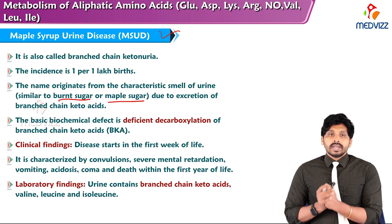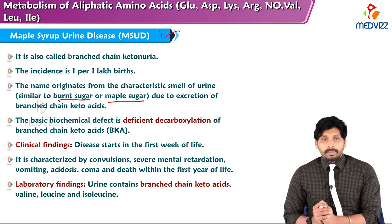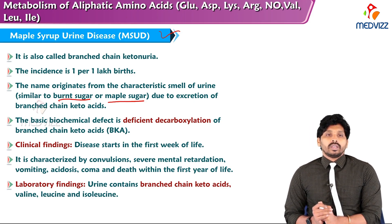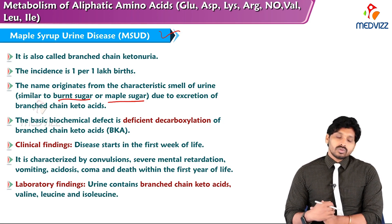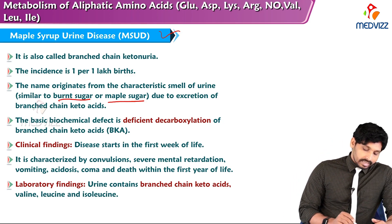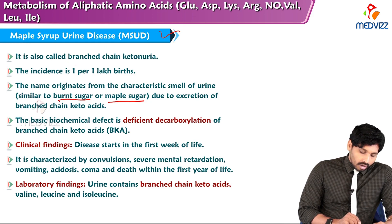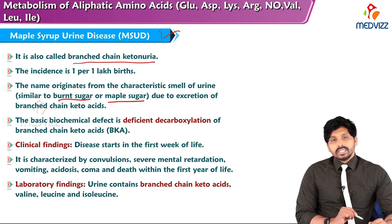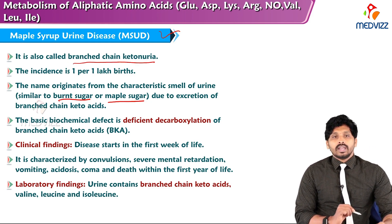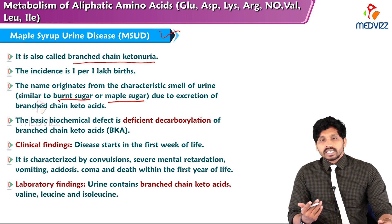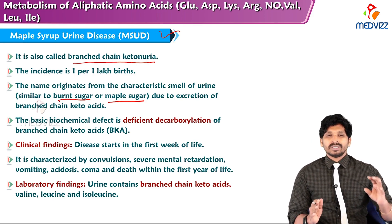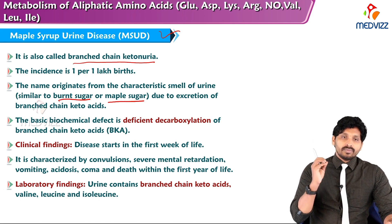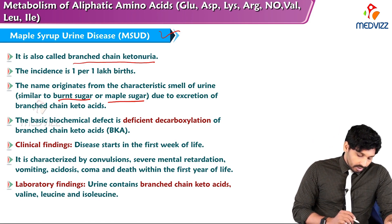The disorders related to branched chain amino acids are maple syrup urine disease and isovaleric aciduria. Maple syrup urine disease is otherwise known as MSUD or branched chain ketonuria. The incidence is 1 per 1 lakh births. The name originates from the characteristic sweet smell of urine, similar to burnt or maple sugar, due to the excretion of branched chain keto acids in the urine.